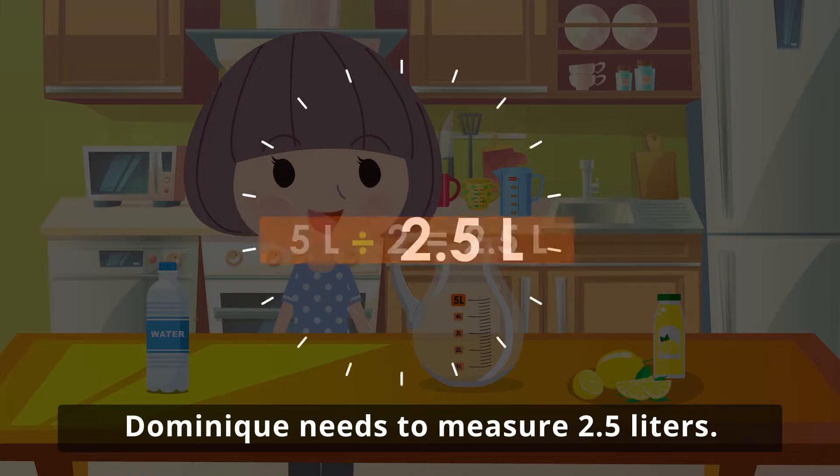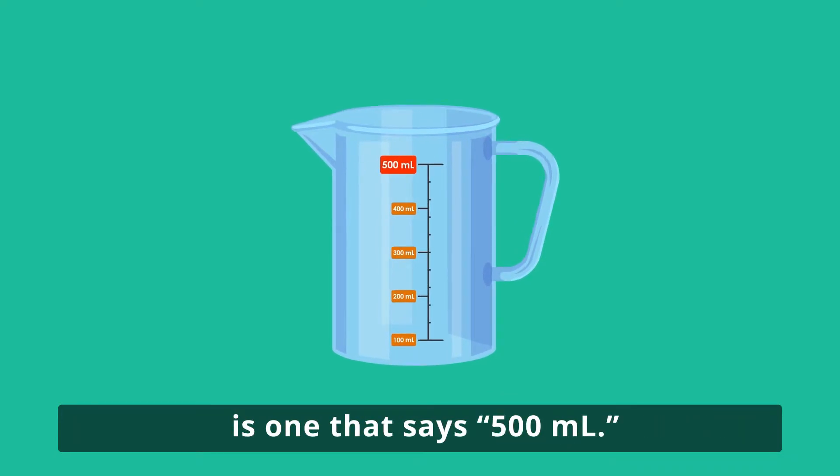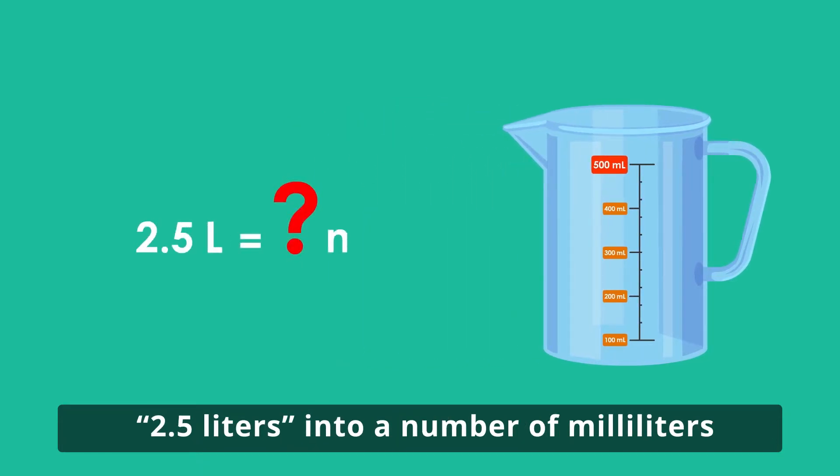Dominique needs to measure 2.5 liters. However, the only measuring cup she can find is one that says 500 milliliters. To use this cup, she has to change the number 2.5 liters into a number of milliliters that means the same volume.